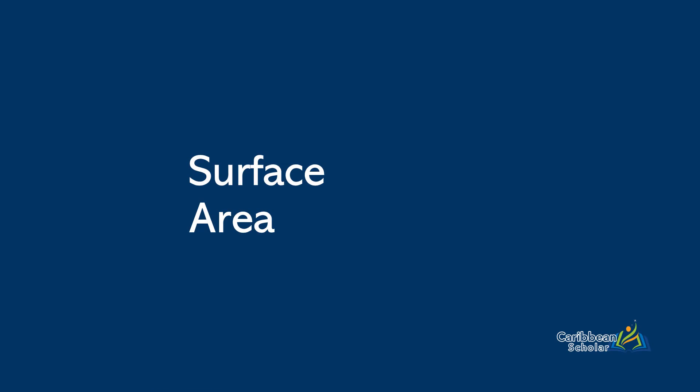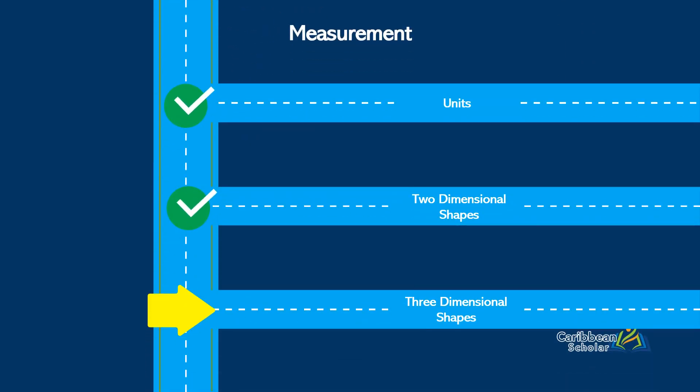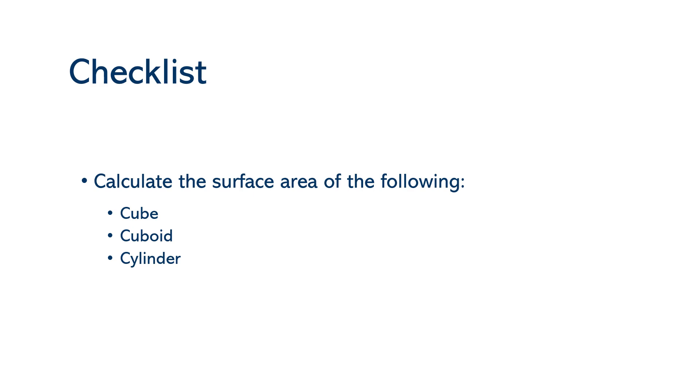Surface area. Good news, we finally finished two-dimensional shapes and now we're on to the first video in three-dimensional shapes, which has to do with surface area. Here's your checklist, and that is to calculate the surface area of the following: we have a cube, a cuboid, and a cylinder. All right, let's begin the lesson.